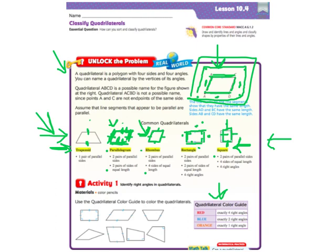So this one right here has exactly four right angles. That's the only one that I see that has four right angles. This one right here has two. This one has one. The others don't have any. So this is the only one that's going to be red. If you don't have a red you can just write an R.